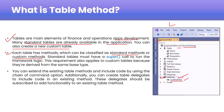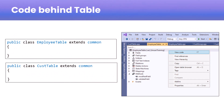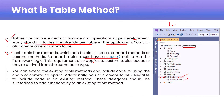Each table has methods which can be classified as standard methods or custom methods. The modifiedField method is a standard method overridden from the common base class. In case of a standard table it must have a super() call, and this super() call will invoke the base class methods to run the framework logic or standard business logic code.